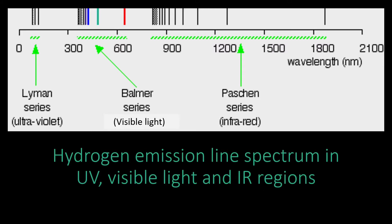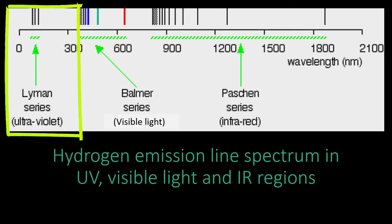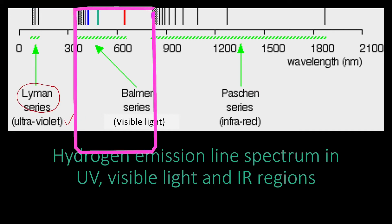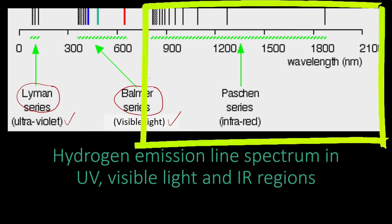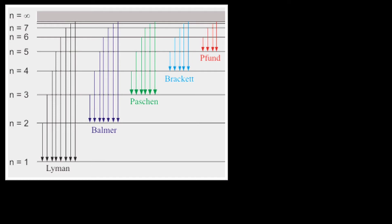The hydrogen emission line spectrum can form in the UV light region, which gives rise to the Lyman series, or it can also be formed in the visible light region to give the Balmer series, or it can also form in infrared regions to give the Paschen series, Brackett series, and also Pfund series.